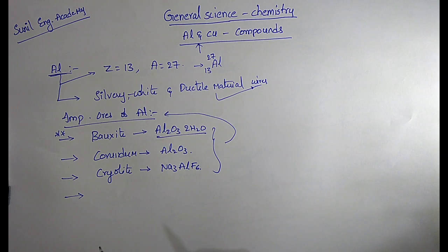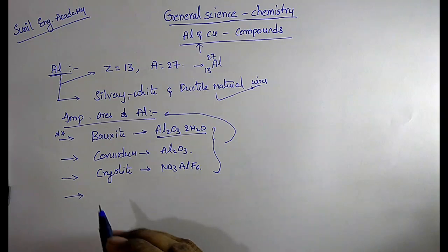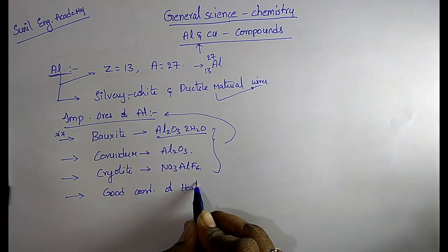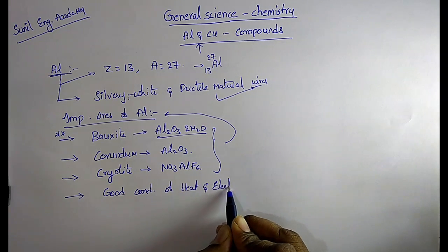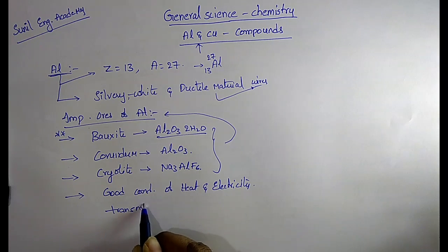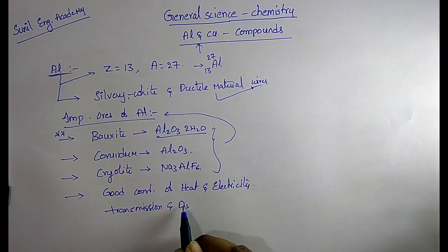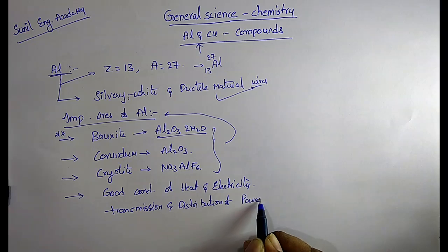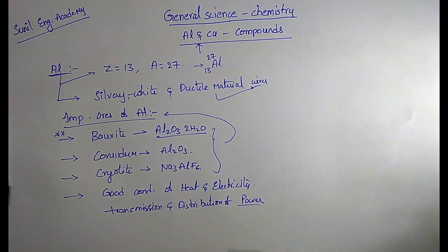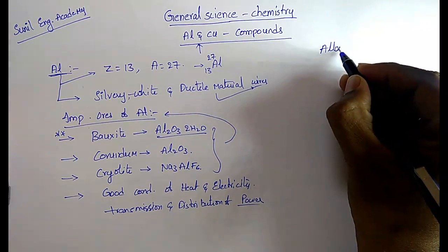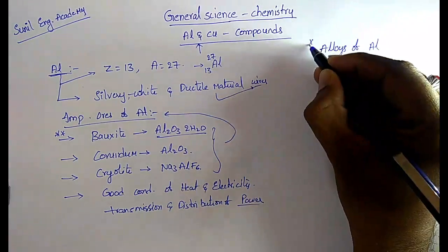Aluminium is a good conductor of electricity and heat. That is why it is used for transmission and distribution of power. These are the important properties and alloys of aluminium.